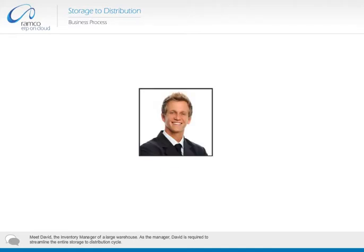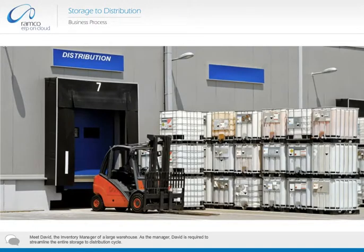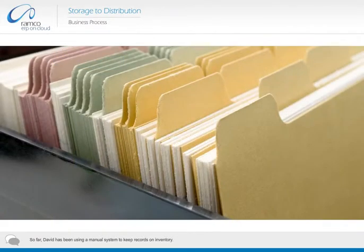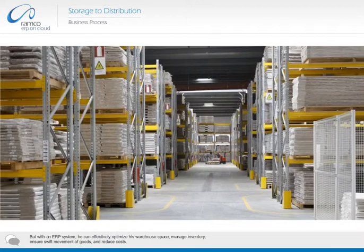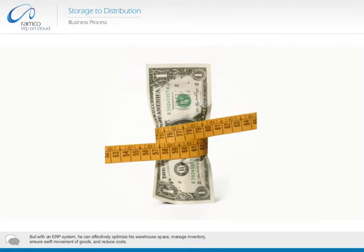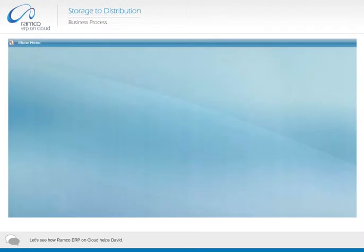Meet David, the inventory manager of a large warehouse. As the manager, David is required to streamline the entire storage to distribution cycle. So far, David has been using a manual system to keep records on inventory. But with an ERP system, he can effectively optimize his warehouse space, manage inventory, ensure swift movement of goods, and reduce costs. Let's see how Ramco ERP on cloud helps David.